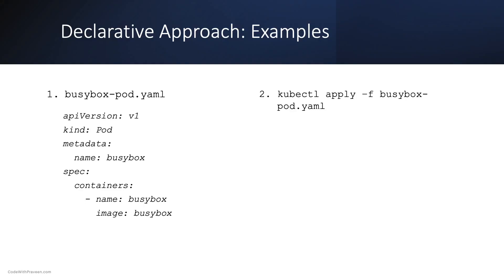Regarding example usage, the busybox pod YAML file shows the YAML manifest file of a pod. Once the file is created, this configuration can be applied using the kubectl apply command by passing the file name.